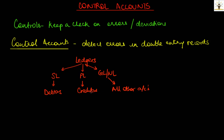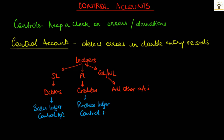Control accounts are of two types: the sales ledger control account and the purchase ledger control account. A sales ledger control account is prepared to determine if the sales ledger is free from errors or not. And in the same way, a purchase ledger control account will help to determine if the purchase ledger is free from errors or not.